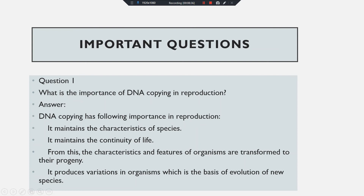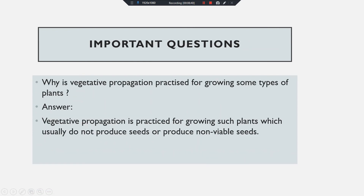The next question: why is vegetative propagation practiced for growing some types of plants? Vegetative propagation is the type of reproduction in which a new plant grows from vegetative parts — meaning by leaf, stem, or root. Vegetative propagation is practiced for growing plants which usually do not produce seeds or produce non-viable seeds. So for such plants, vegetative propagation is the best method for reproduction.